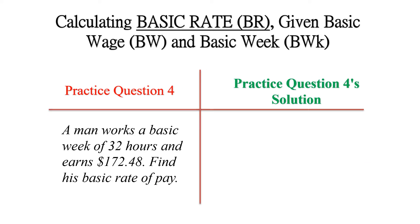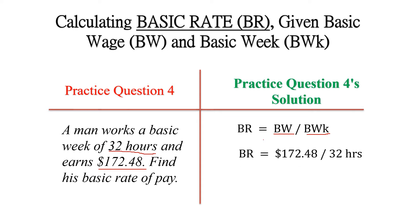There is a practice question. A man works a basic week of 32 hours and earns $172.48. Find his basic rate. Basic rate equals basic wage divided by the basic week, that would be $172.48 divided by 32 hours, which gives us $5.39 as the basic rate for that week.